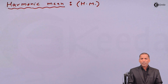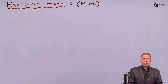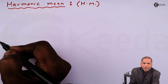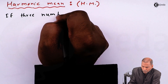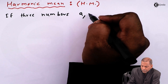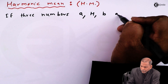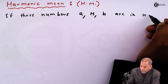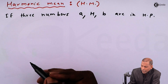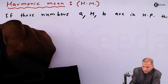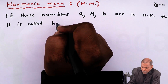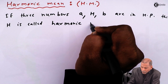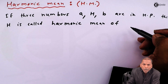Hello friends. Now we define the new term — harmonic mean, in short HM — of the chapter Sequence and Series. Now let's see the definition. If three numbers a, H, b are in HP, that is harmonic progression, then H is called the harmonic mean of two numbers a and b.